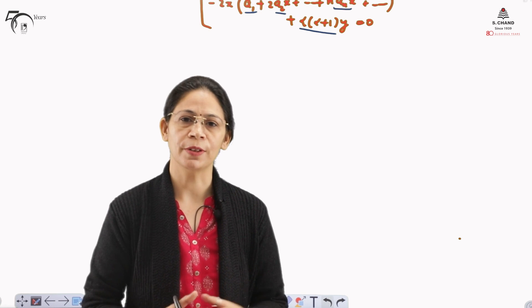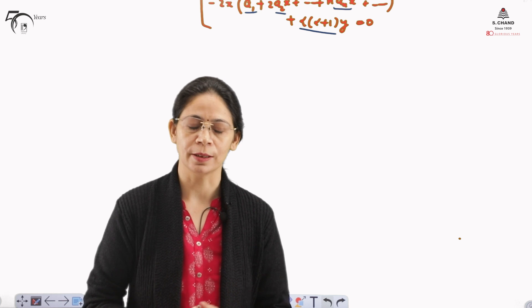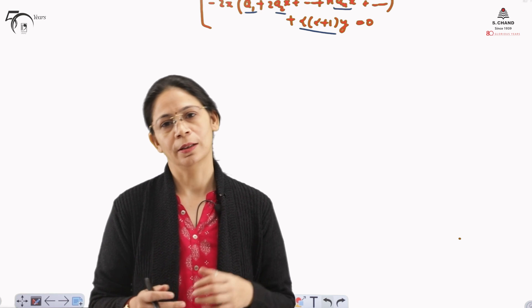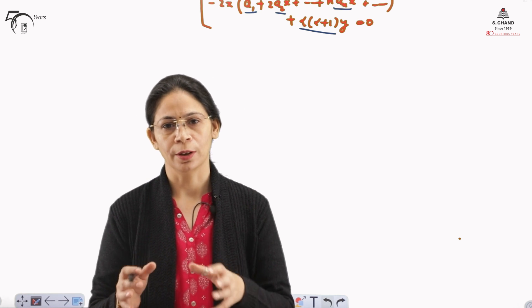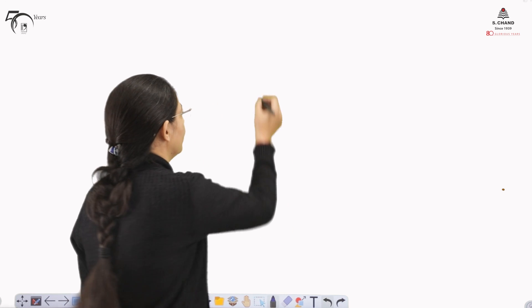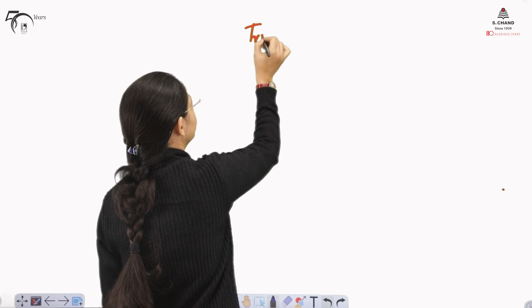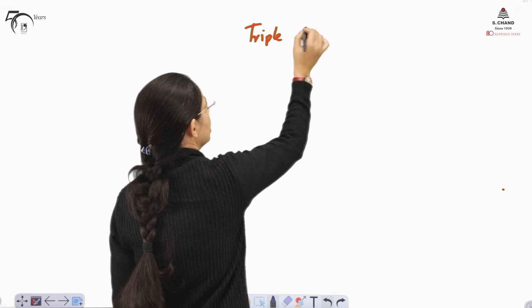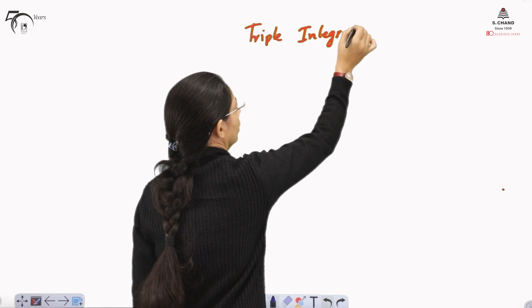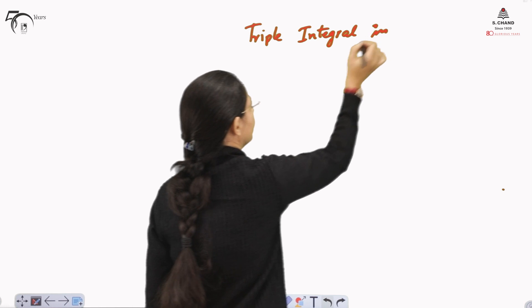In our previous videos, we have already covered double integral. It is in continuation of that that we will try to evaluate this triple integral. As the name indicates, triple integral means there is an involvement of three integrals — triple integral in Cartesian coordinates.